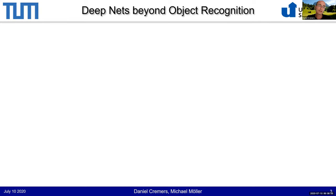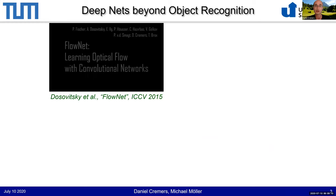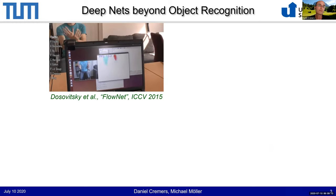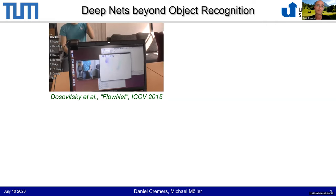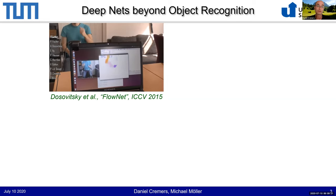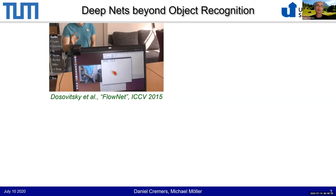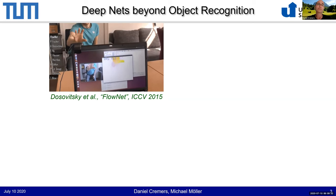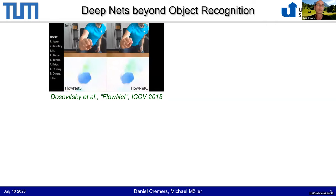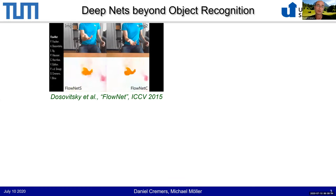That was object recognition. It came as a surprise that this not only solves high-level vision tasks, but also a lot of low-level vision tasks can be tackled very well with deep learning. For example, in 2015, we published one of the first approaches to do optical flow estimation with a neural network — a technique called FlowNet. It just takes two consecutive images and the ground truth flow field and trains a deep network to predict from two images the corresponding flow field. If you have enough training data, this works impressively well and outperforms the state of the art. Today, the best performing optical flow methods are all deep learning based.